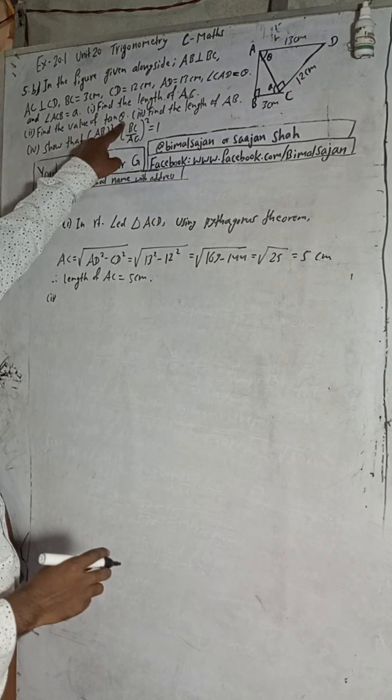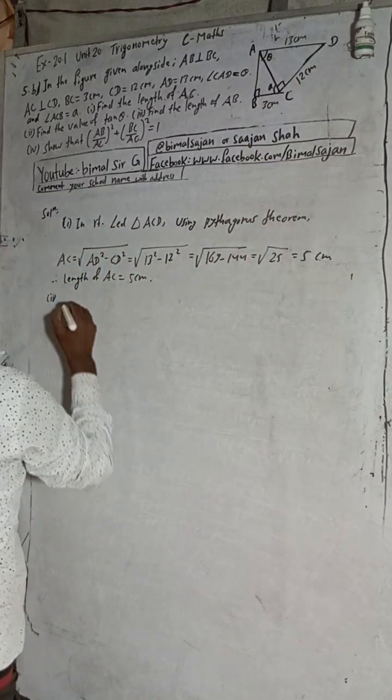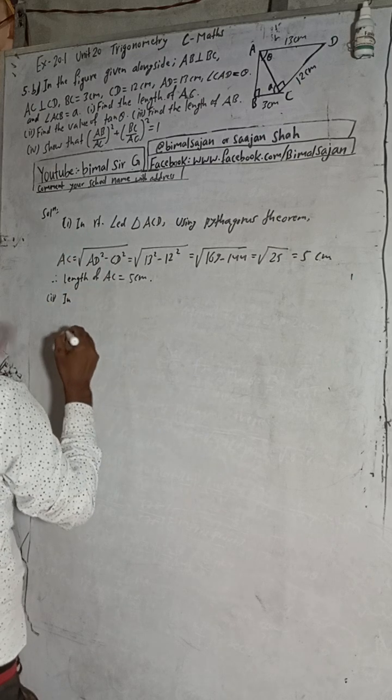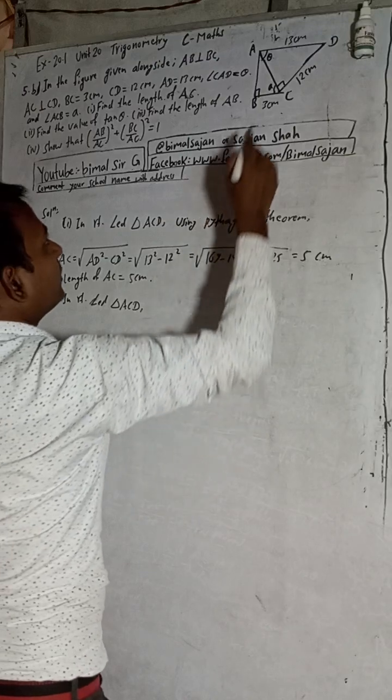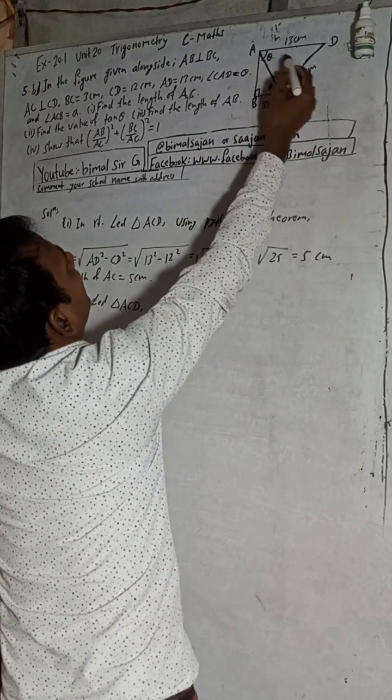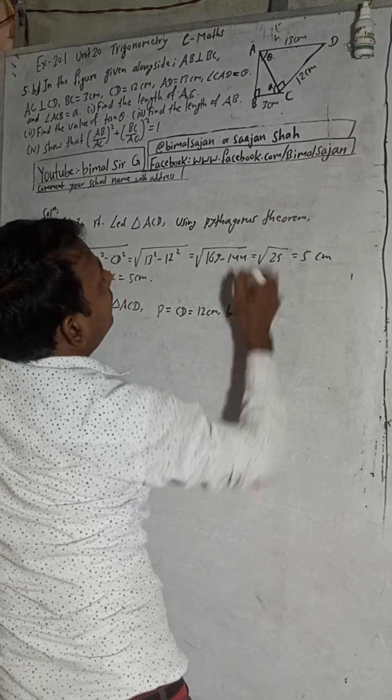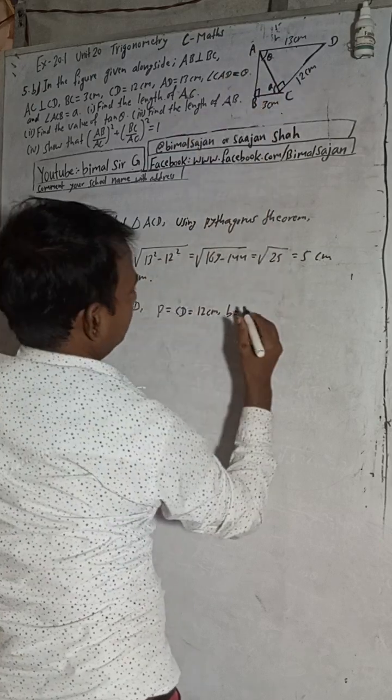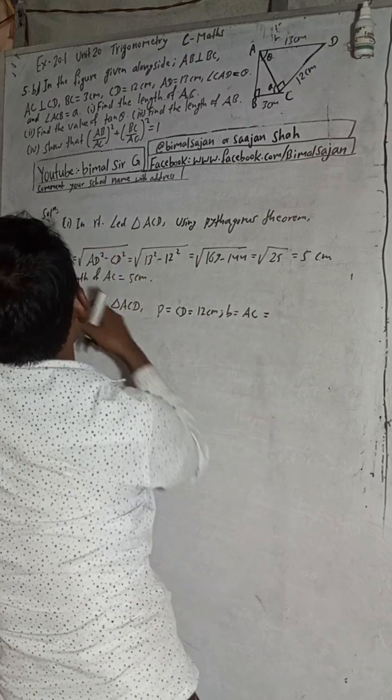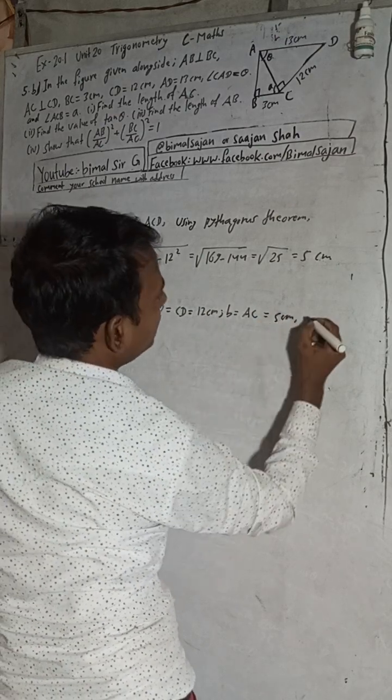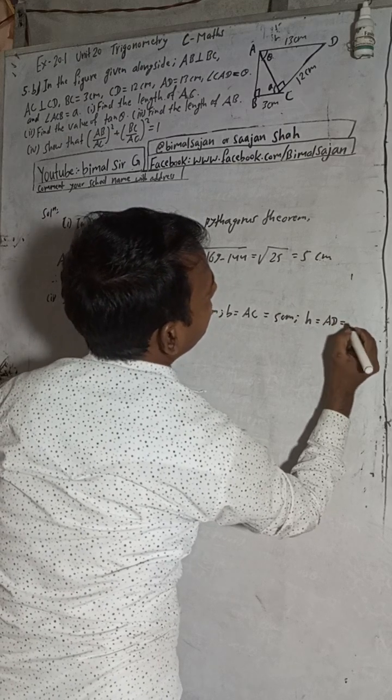Now part 2: find the value of tan theta. In the same right angle triangle ACD, with reference to angle theta, the perpendicular is CD which equals 2cm, and hypotenuse is AD which equals 13cm.